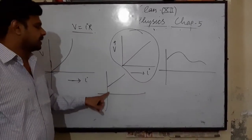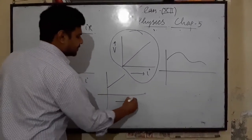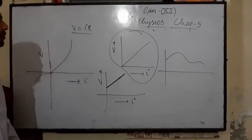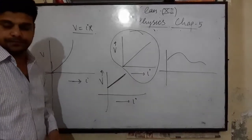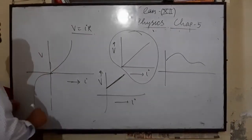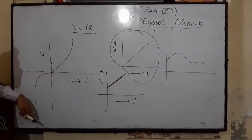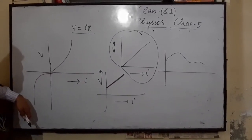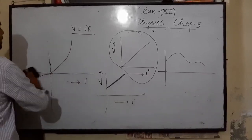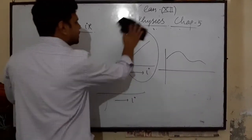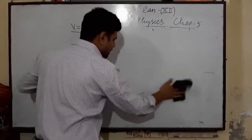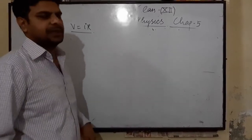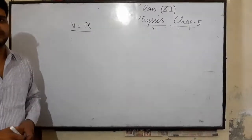If a graph gives a straight line but it is not passing through the origin, it does not obey Ohm's law. Ohm's law applies to metallic conductors and for low values of current. The physical conditions such as temperature must remain constant for Ohm's law to be obeyed.